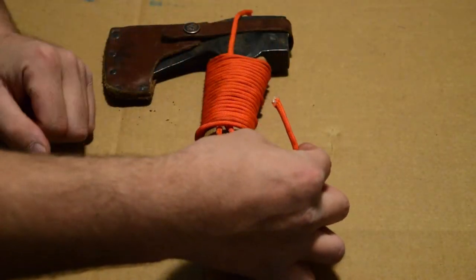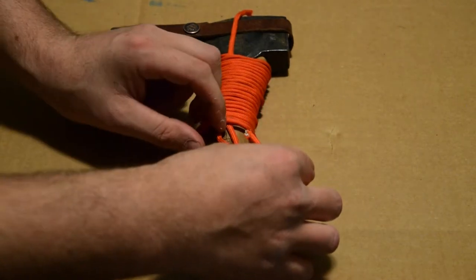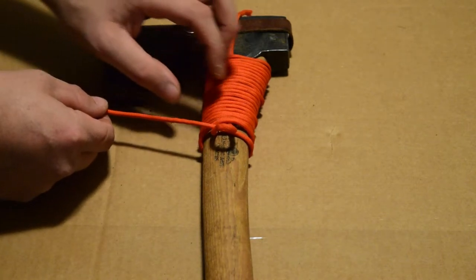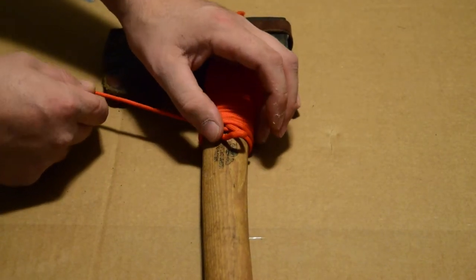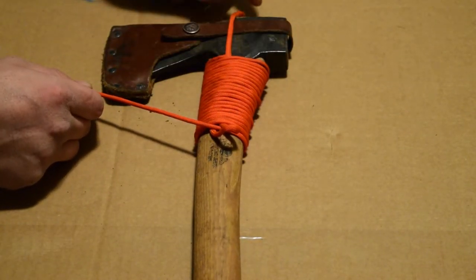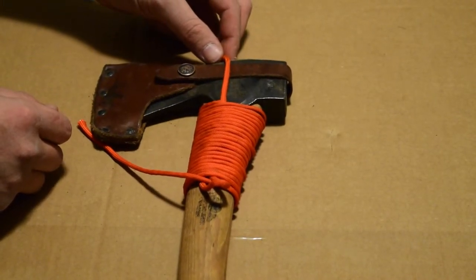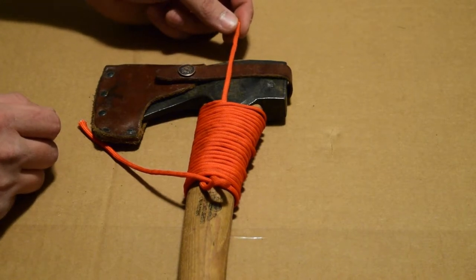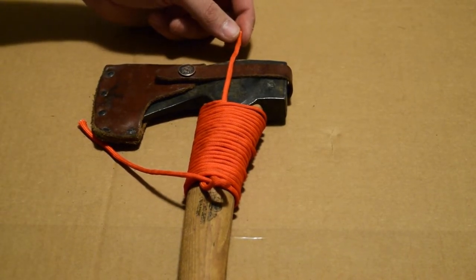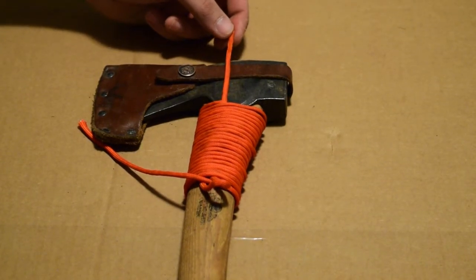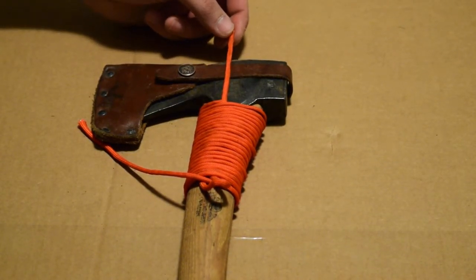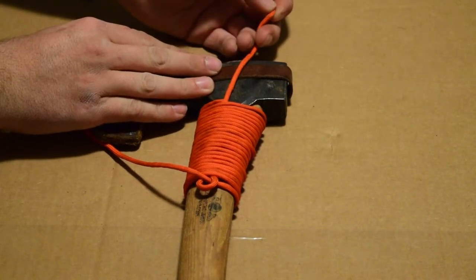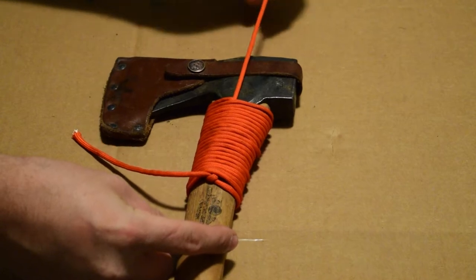we're going to take your end piece of paracord and I'm going to push it right through that loop that we made in the beginning. Now once that loop is through, we're going to go ahead and the end piece that we started off with that was above the axe, we're just going to go ahead and start tugging that through. Which that, as you notice right here, is kind of cinching down that.